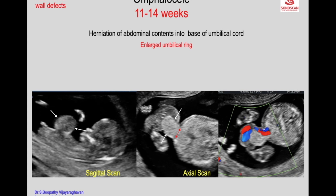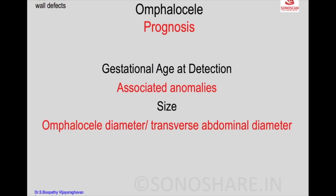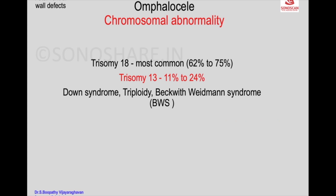In omphalocele, there is an enlarged umbilical ring and the size can vary. The ratio of umbilical diameter to transverse abdominal diameter is used — if it is more than 0.8, it indicates a large omphalocele. Beckwith-Wiedemann syndrome may also be seen, and chromosomal anomaly risk is inversely associated with liver herniation.